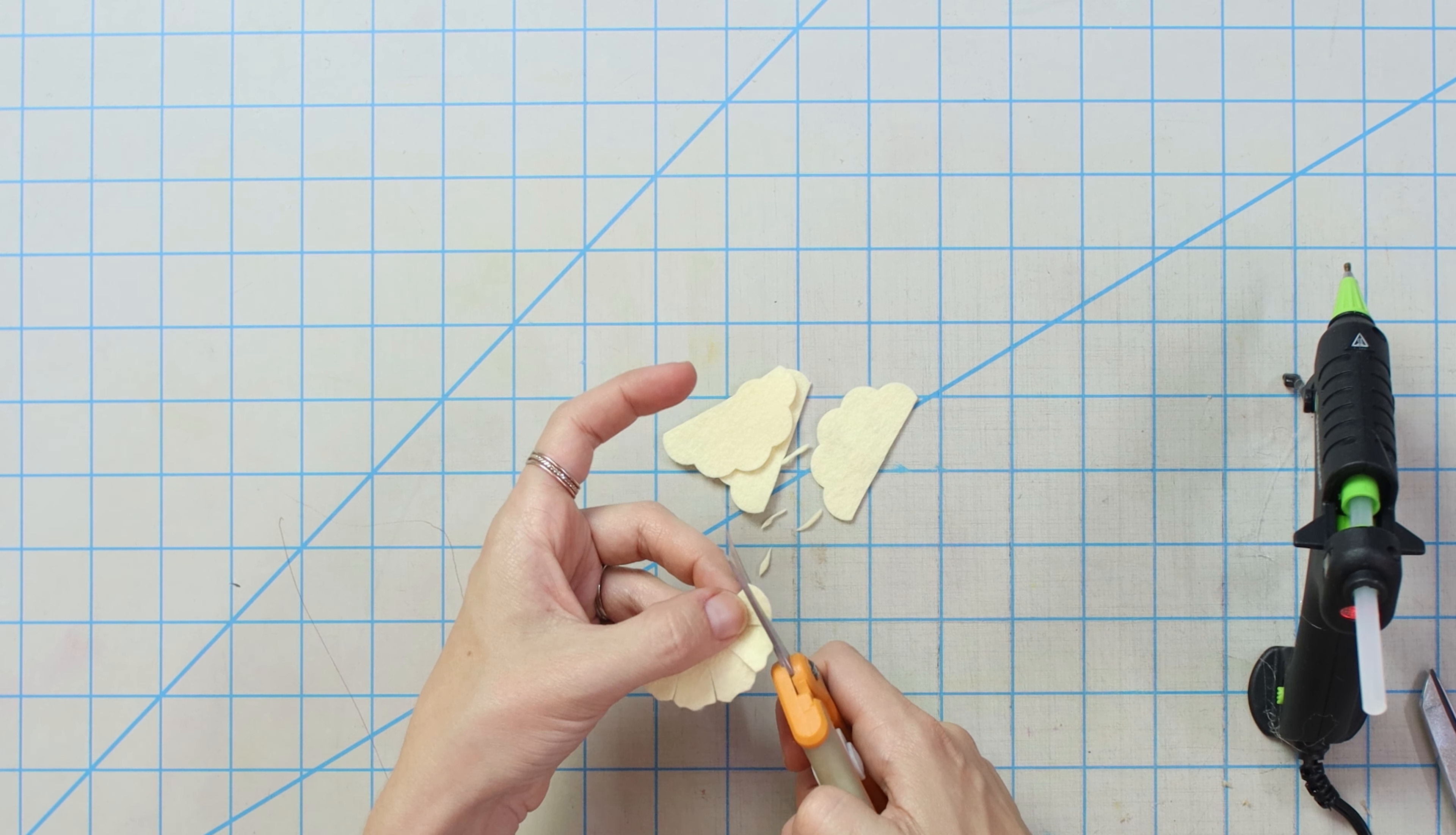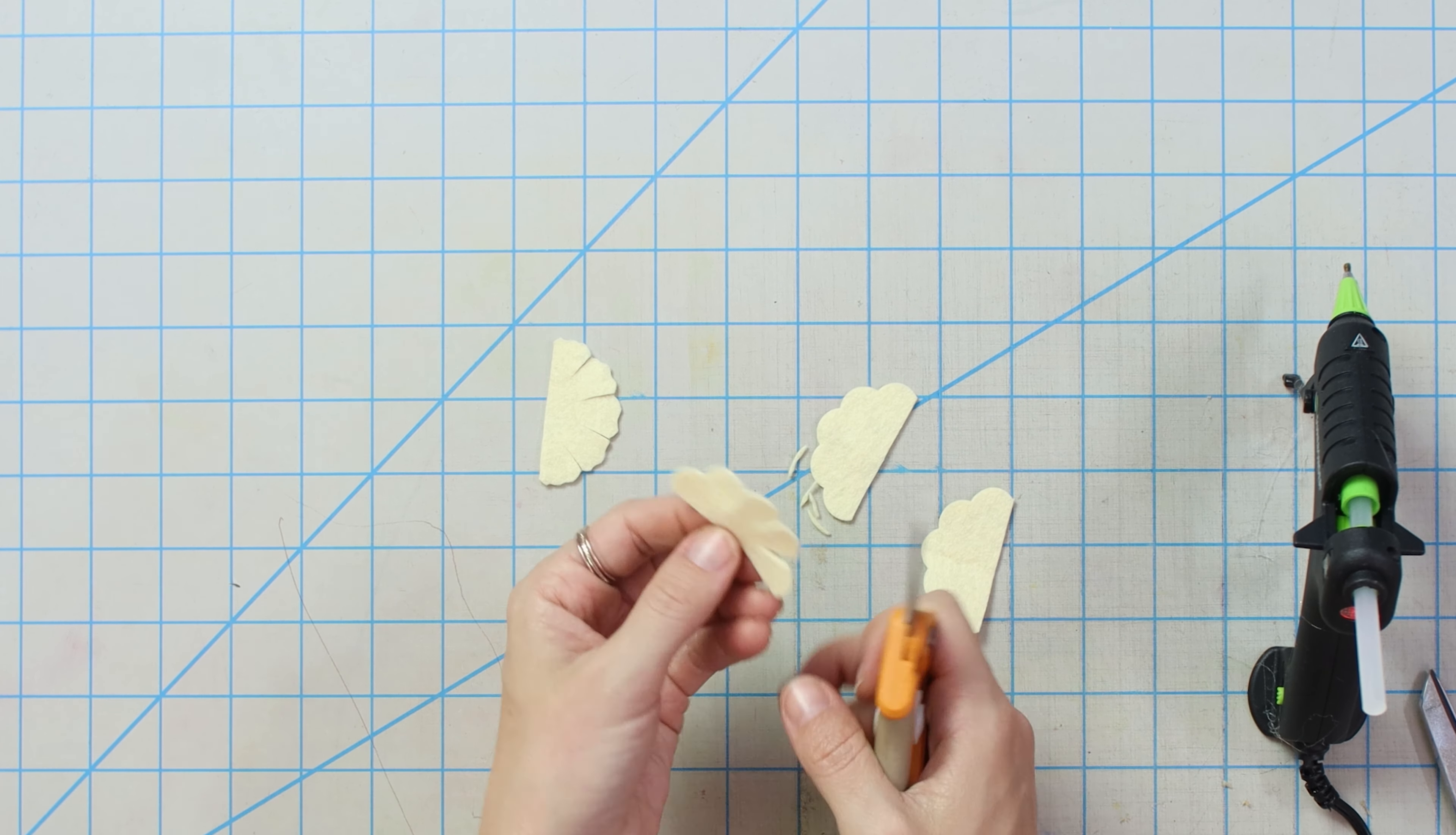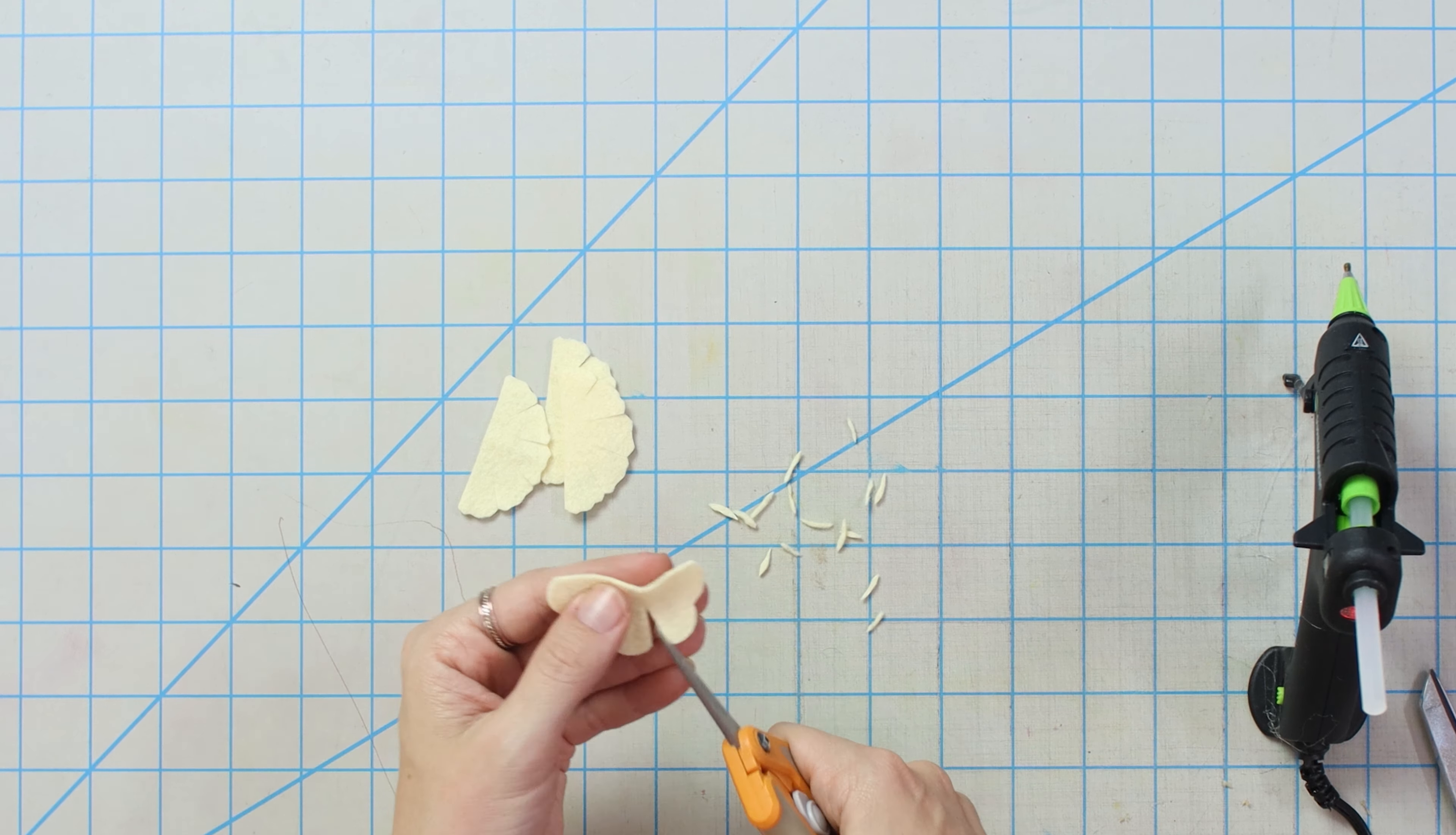And then we're going to go ahead and just kind of mess with the petals a little bit. I'm just going through each petal and putting little squigglies and divots and just making them all a little different through all of them. So we're going to do the same thing on all of our petals.